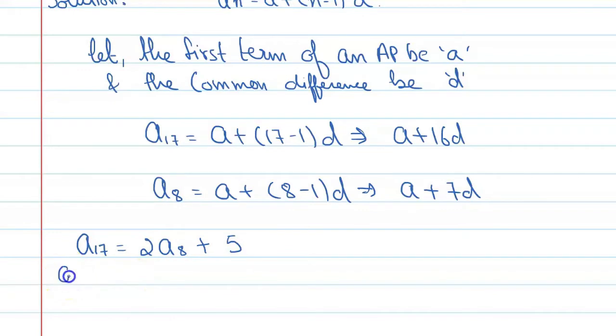Put these values. You can say A plus 16D is equal to 2 times A plus 7D plus 5. So A plus 16D is equal to 2A plus 14D plus 5.